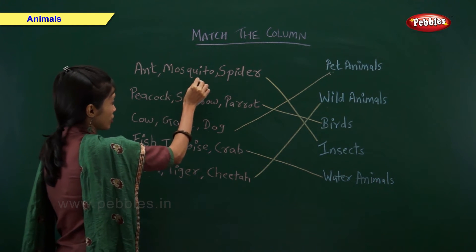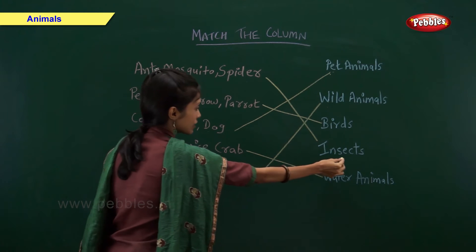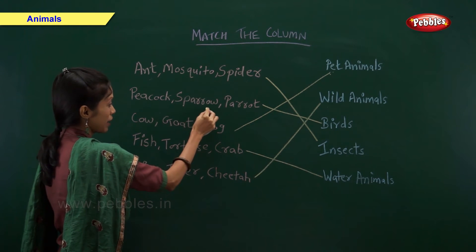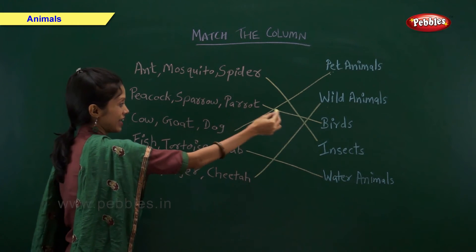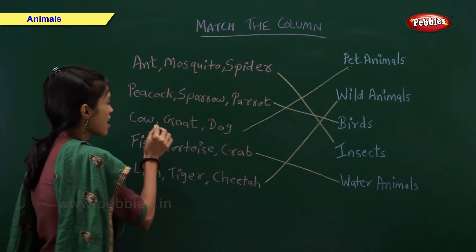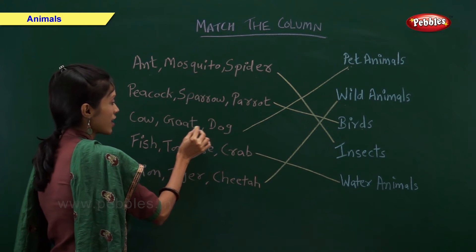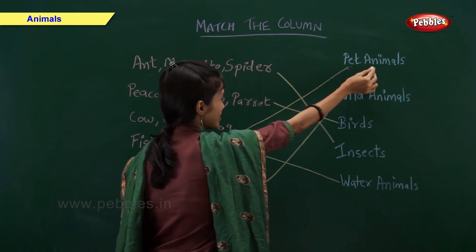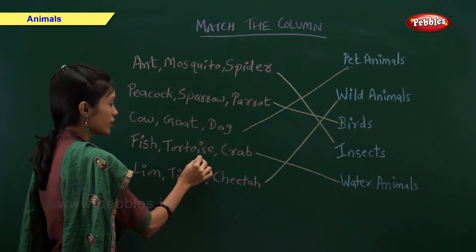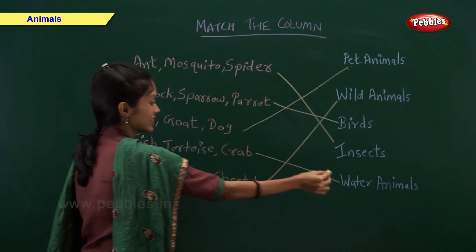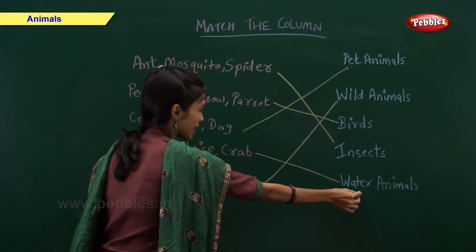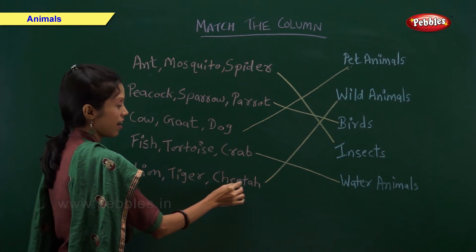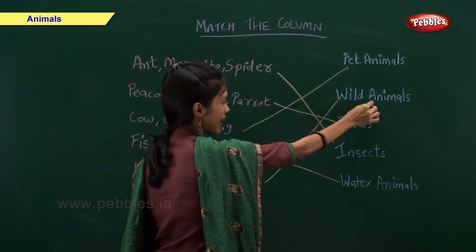So, ant, mosquito and spider are examples of insects. Peacock, sparrow and parrot are examples of birds. Tiger and cheetah are examples of wild animals.